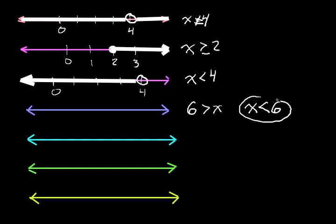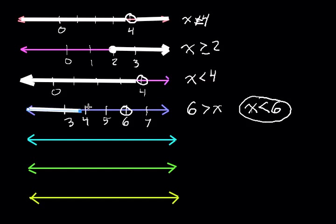So we're going to graph x is less than 6. Let's put tick marks — you don't have to have 0 at all; you can have 3, 4, 5, 6, 7. We're going to have an open circle at 6, because there's no equal to sign. And since x is less than 6, we're going to shade to the left. Don't forget to shade your arrowhead.